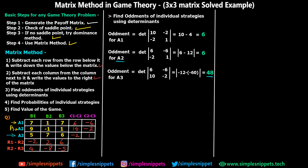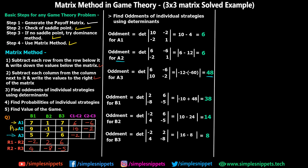Now similarly we find oddments for player B's strategies. For oddment B1, we exclude the first column and take 2, 6, −8, and −5, giving a determinant of 38. For B2, we exclude the middle column and take −2, 6, 4, and −5. The calculation is (−2 × −5) minus (6 × 4), giving 10 minus 24, and we obtain a determinant of 14.